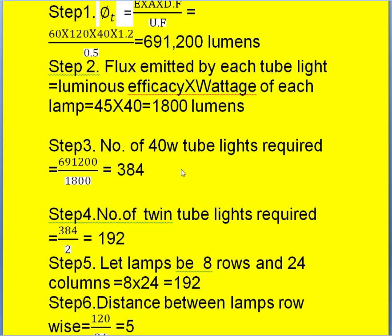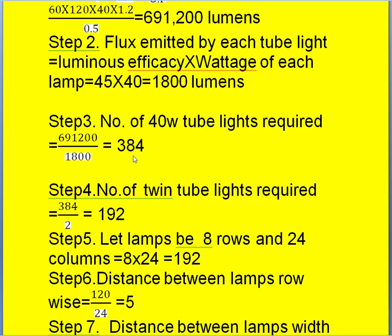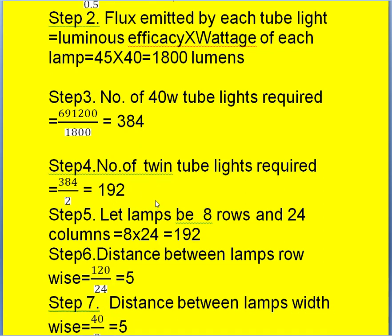If we use twin tube lights, this number becomes half, since in factories twin tube lights are normally used. So the number of twin tube lights required equals the total number divided by 2, giving 192. Now arranging these lamps in the factory: assume 8 lamps width-wise and 24 column-wise. Multiplying both gives 192, which matches the calculation.